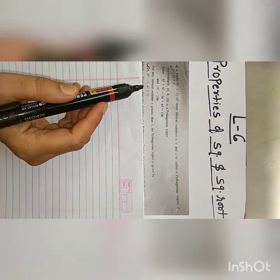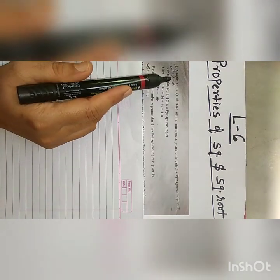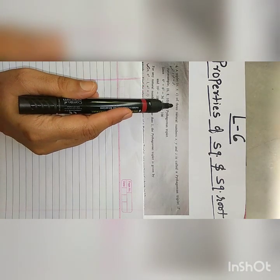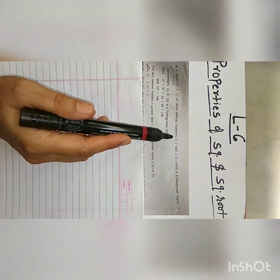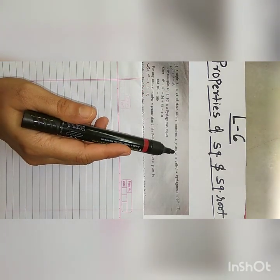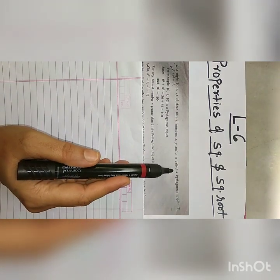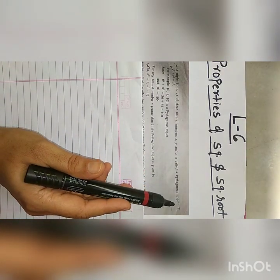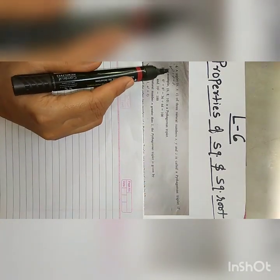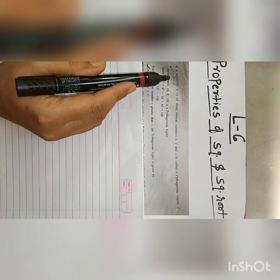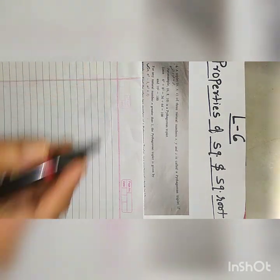What is the 6th property? A triplet x, y, z of 3 natural numbers x, y and z is called a Pythagorean triplet if x square plus y square is equal to z square.